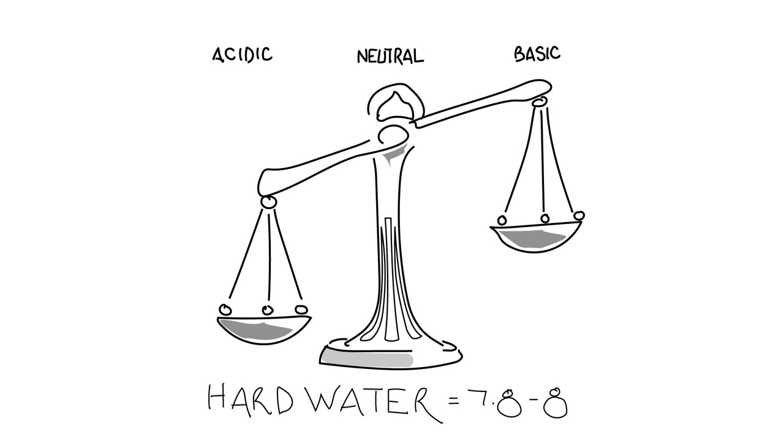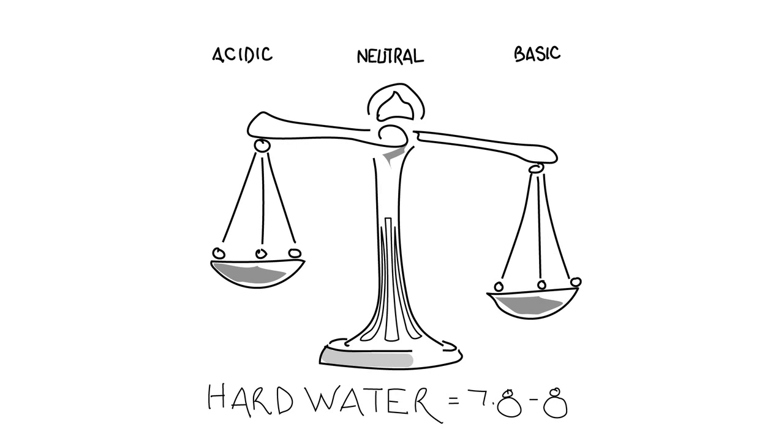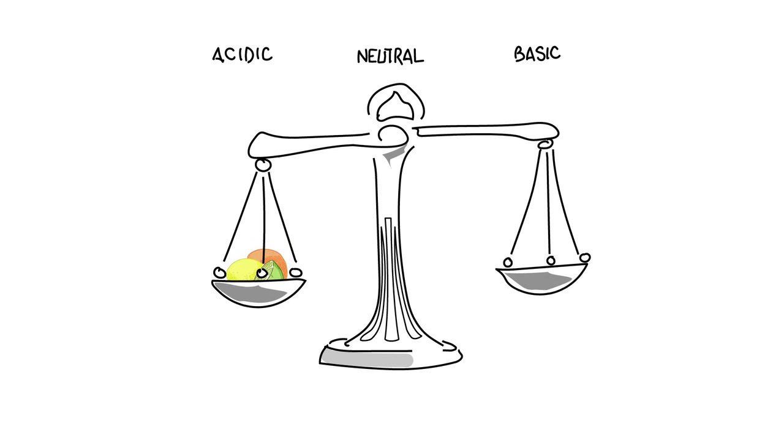Hard water usually has a pH level of 7.8 to 8, just about as high as seawater. Citrus fruits are naturally acidic with a pH level of 2.5. Nuvo uses the power of citrus to balance the pH of your water, so scale is prevented from forming.